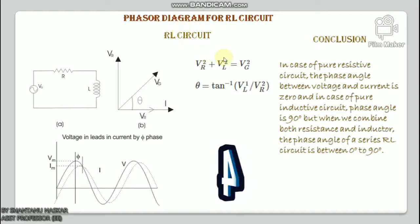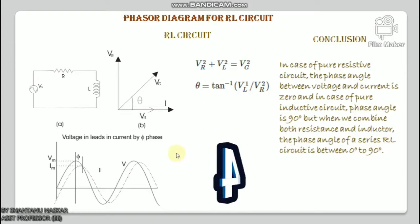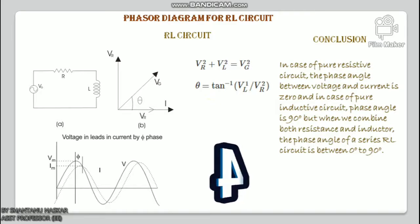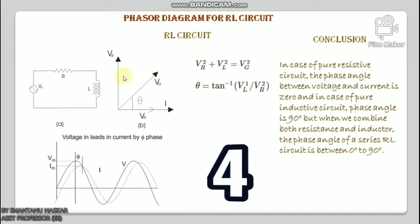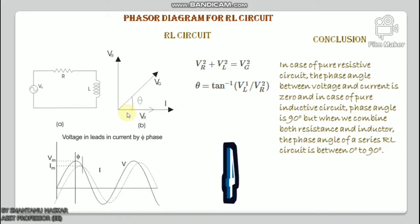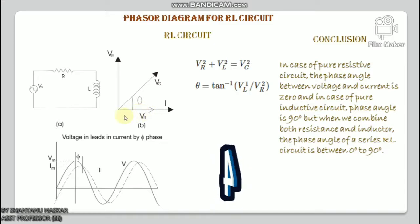For drawing the phasor diagram of a series RL circuit, the following four steps should be followed. Step one: since resistor and inductor are connected in series, the current flowing in both elements is the same — IR = IL = I. Take the current phasor as reference and draw it on the horizontal axis. Step two: in case of a resistor, both voltage and current are in the same phase, so draw the voltage phasor VR along the same axis as the current phasor — VR is in phase with I.